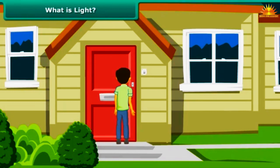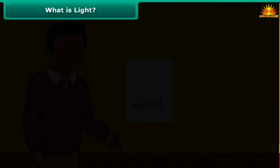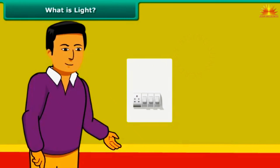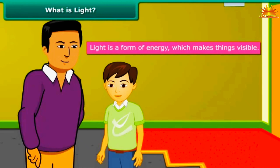It is night and you step inside the house. There is darkness all around. Everything appears black. You can hardly see anything. Your father switches the light on. Now you can see everything clearly. It means light enables viewing. Therefore, light is defined as a form of energy which makes things visible.